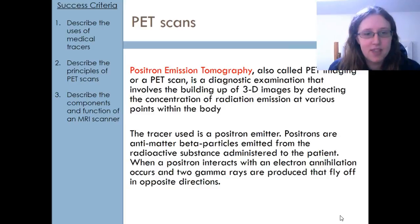This is beta plus decay. So the radioactive material we inject is a beta plus emitter. And that positron that is emitted is going to interact with an electron in the patient's body. Matter meets antimatter. We know that causes annihilation. So we get two gamma rays that are given off that fly off in opposite directions.